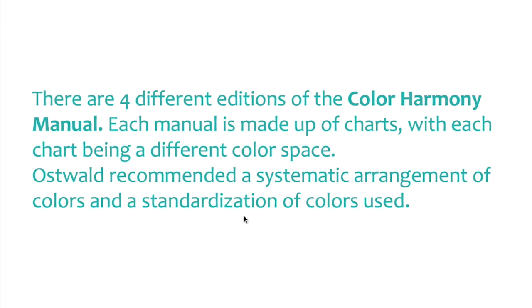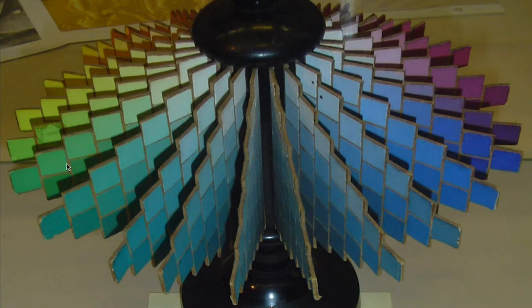The color harmony manual uses different colors which are used in every place. Colors such as green and red are part of the color organization system, and this is basically the way color is understood.